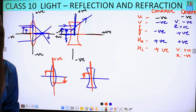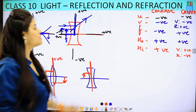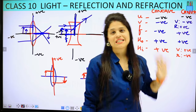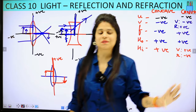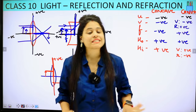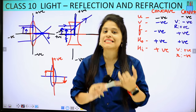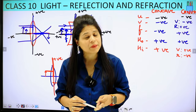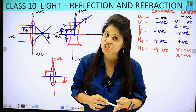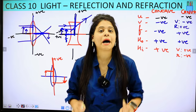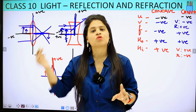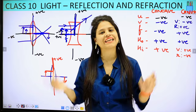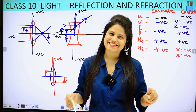So all signs are the same — only the focal length is the difference between concave and convex lenses. In this session we have seen sign conventions, the lens formula, and magnification. Now we will go to numericals, so let's solve the numericals.